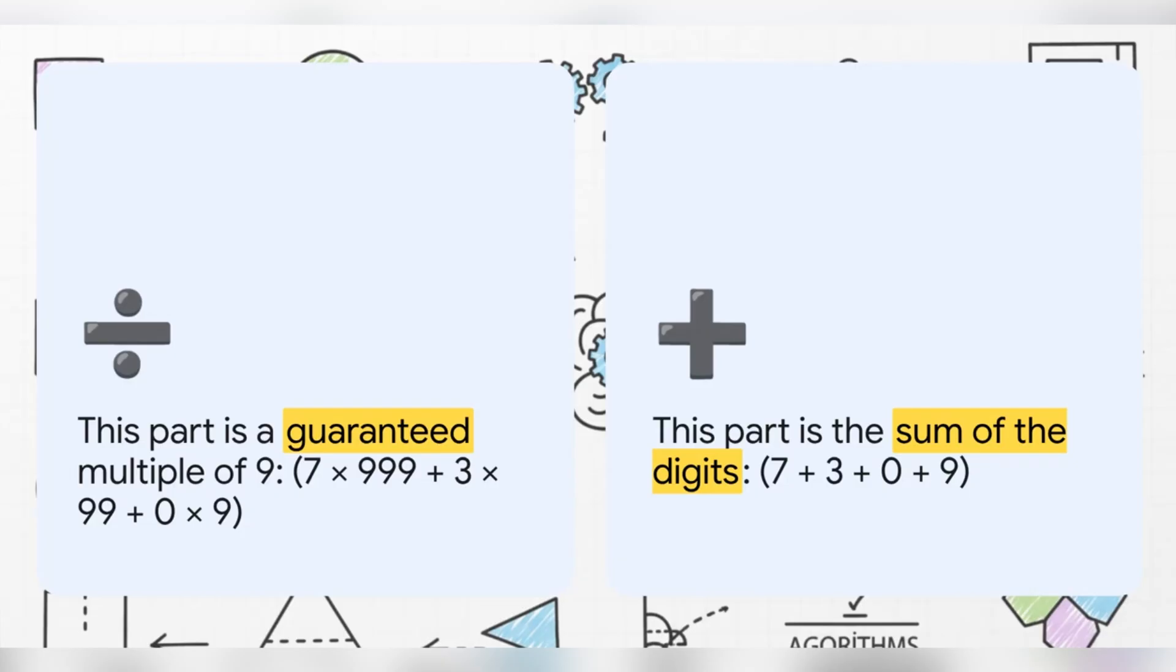And right here, this is the secret sauce. When we rearrange this whole big expression, we can split it into two neat little piles. The pile on the left? That is guaranteed to be a multiple of 9, right? Because every piece of it has a factor like 999 or 99. And the pile on the right? Well, look at that. It's just the sum of the digits from our original number.